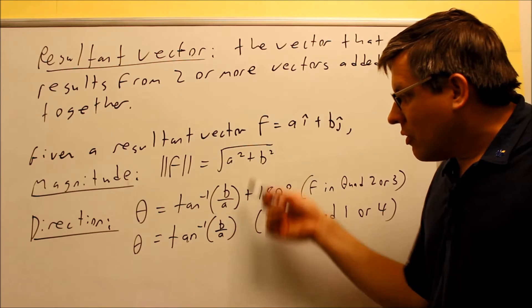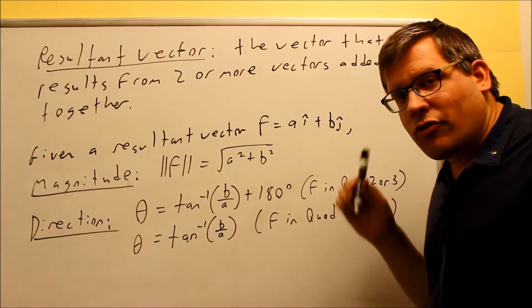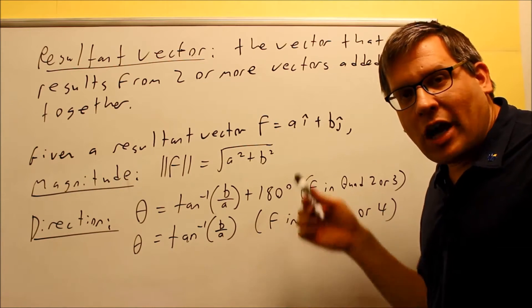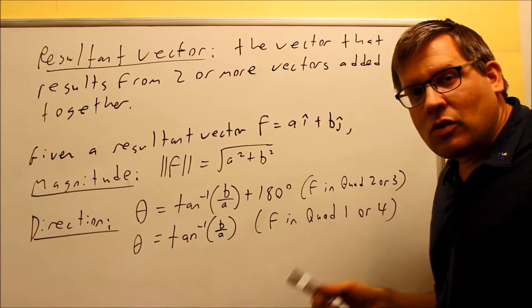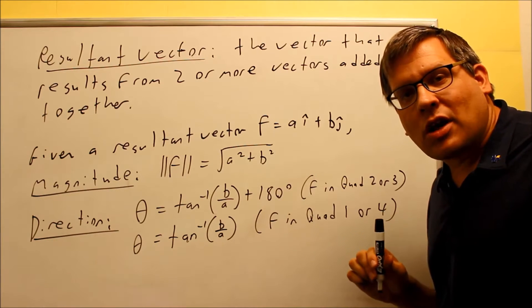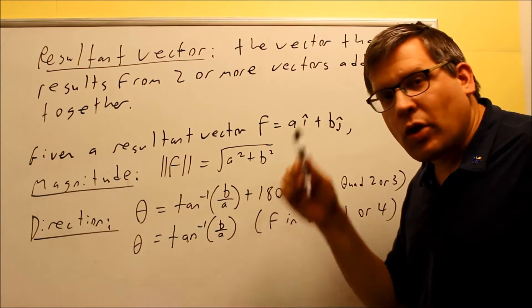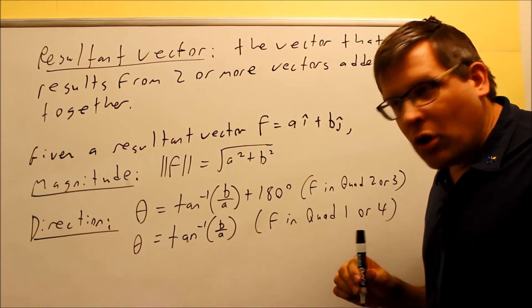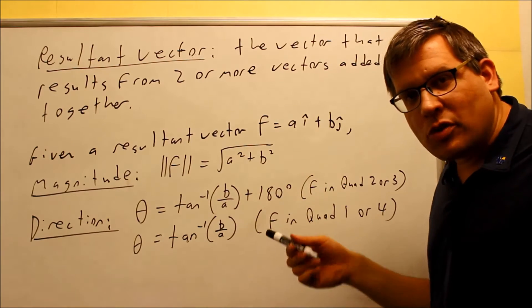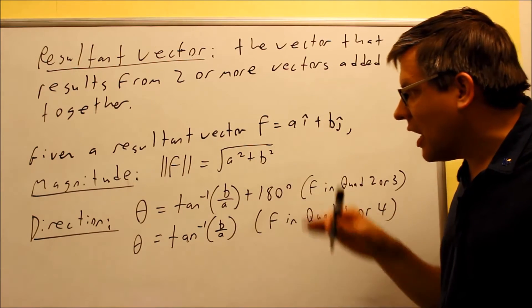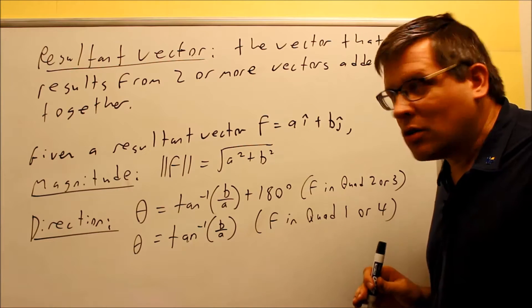Now, if you think that these formulas might look familiar, that's true. They are going to be familiar. These are actually the same ones that was used in the section where we talked about the polar coordinates. When we go from the rectangular into polar, this is exactly the same formula. This also applies here in this case for finding the direction of the resultant vector.